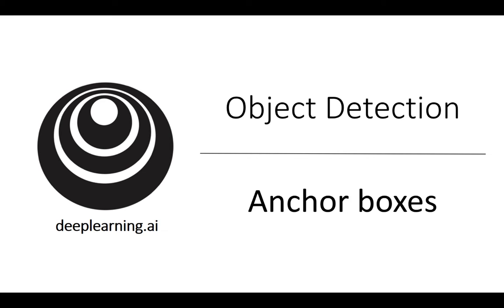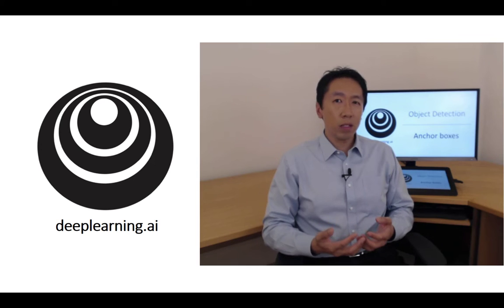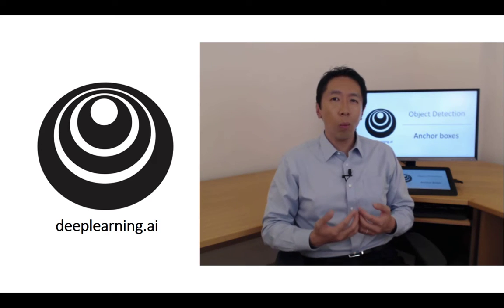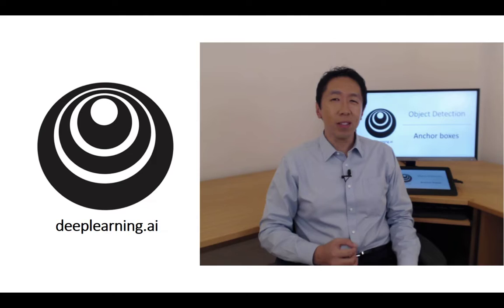One of the problems with object detection as you've seen it so far is that each of the grid cells can detect only one object. What if a grid cell wants to detect multiple objects? Here's what you can do: you can use the idea of anchor boxes.